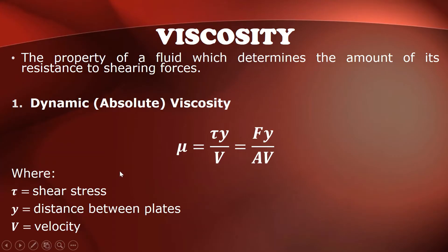The dynamic viscosity is symbolized as mu, and is equal to the shear stress times y (the distance between plates) divided by the velocity. Since shear stress is equal to force over area, the dynamic or absolute viscosity is also equal to force times y divided by area times velocity.